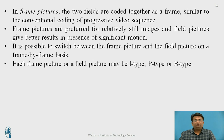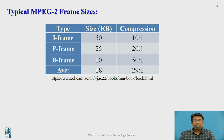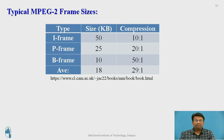Each frame or field picture may be of I-type, P-type, or B-type. Regarding MPEG-2 frame sizes: an I-frame is typically 50 KB with a compression ratio of 10:1; a P-frame (predictive frame) is 25 KB with a compression ratio of 20:1; and a B-frame (bipolar frame) is 10 KB.